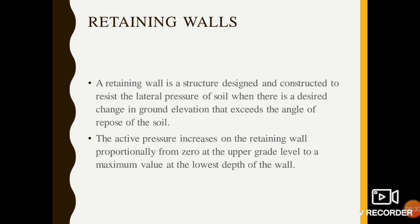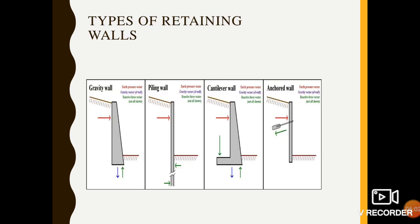Retaining walls are also used in highways. A retaining wall is a structure designed and constructed to resist the lateral pressure of soil when there is a desired change in ground elevation that exceeds the angle of repose of the soil. The active pressure increases on the retaining wall proportionally from zero at the upper grade level to a maximum value at the lowest depth of the wall. Types of retaining walls include gravity wall, piling wall, cantilever wall and anchored wall.